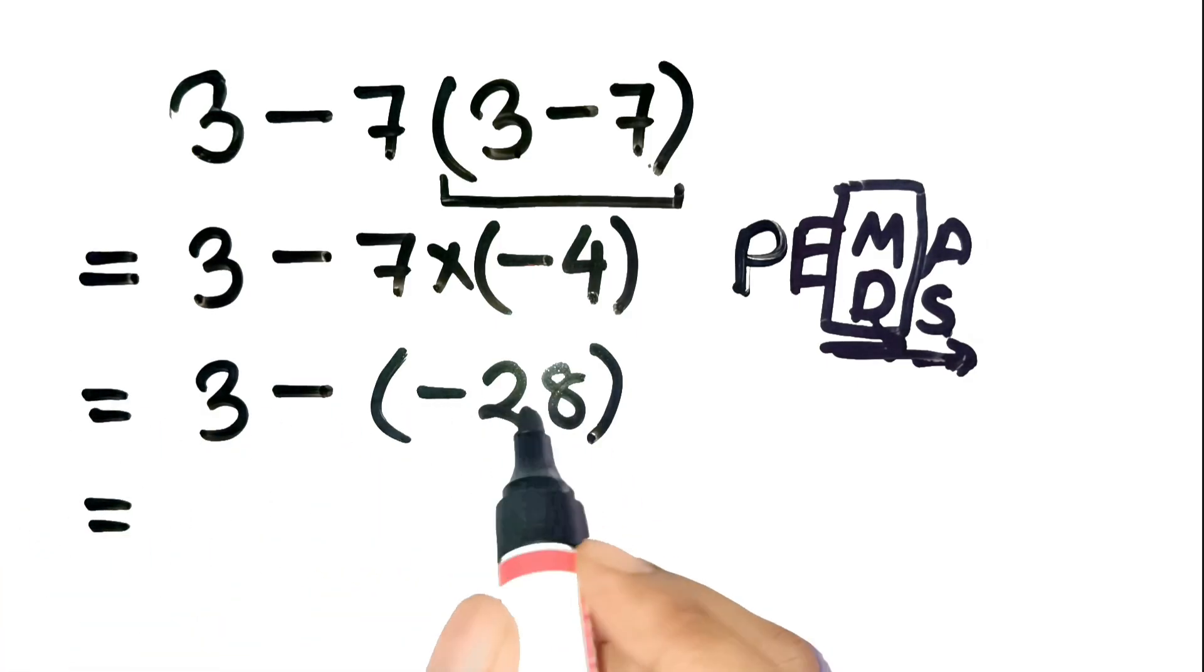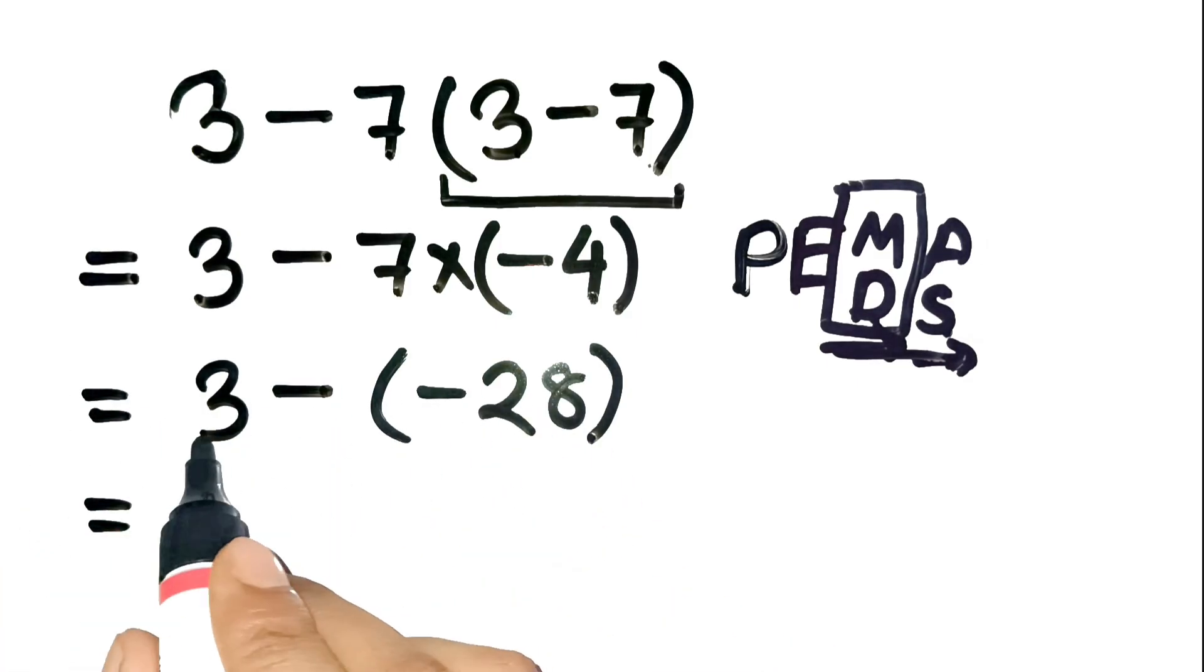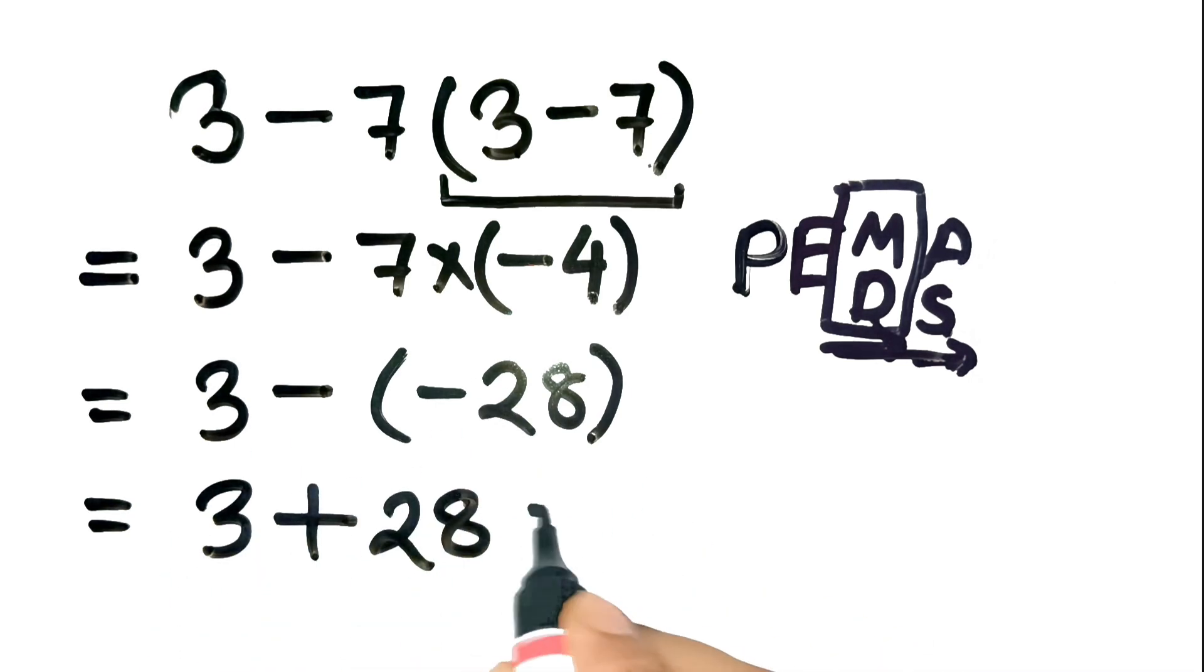Now the expression is 3 minus negative 28. And subtracting a negative is the same as adding a positive. So 3 minus negative 28 becomes 3 plus 28, which equals 31.